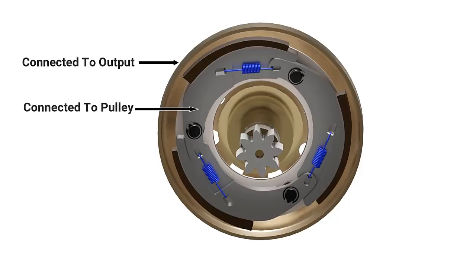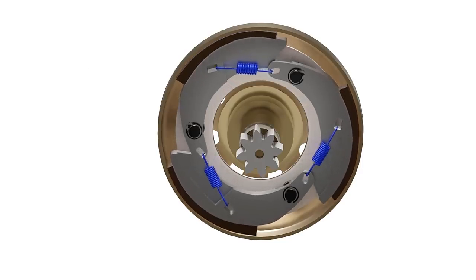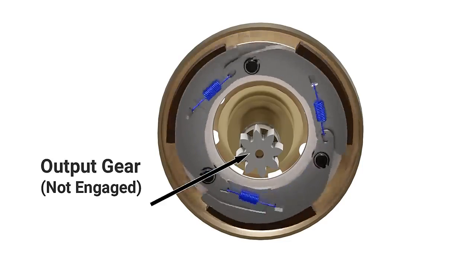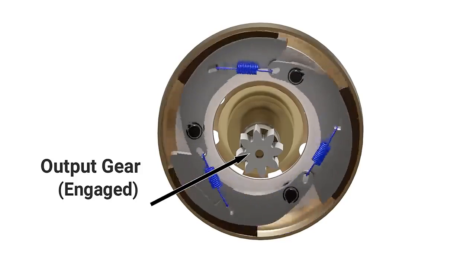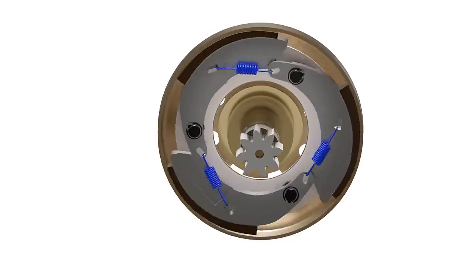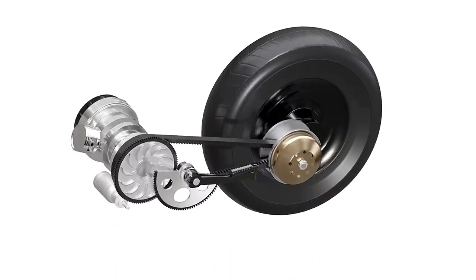When sufficient speed is reached, the centrifugal force causes the arms to swing outward, and the friction pads engage with the clutch housing. The clutch housing transfers power to the rear wheel through a gear train.